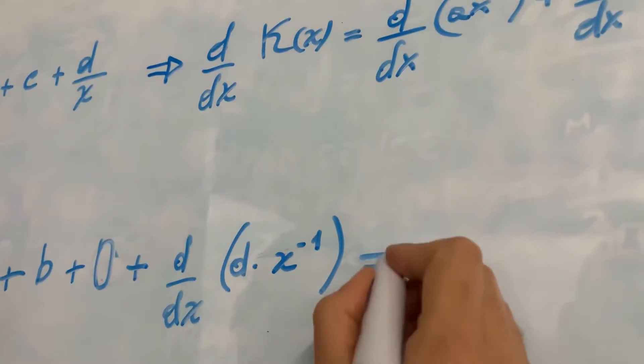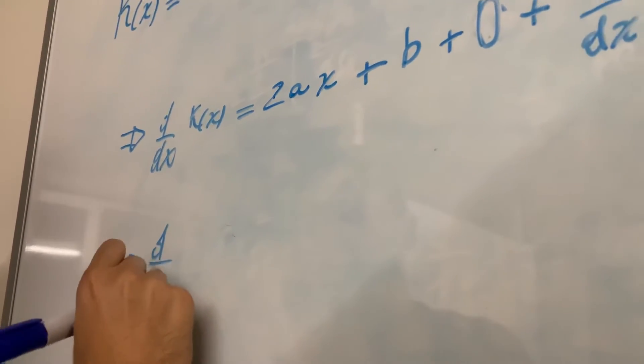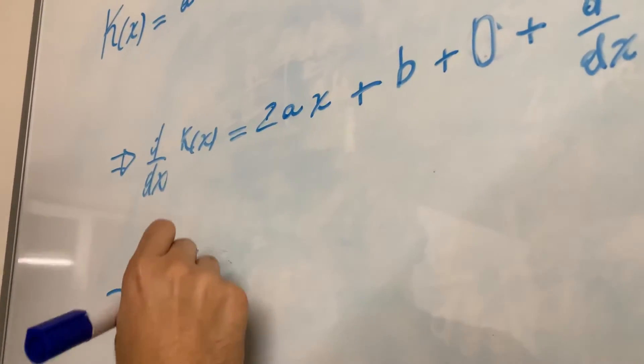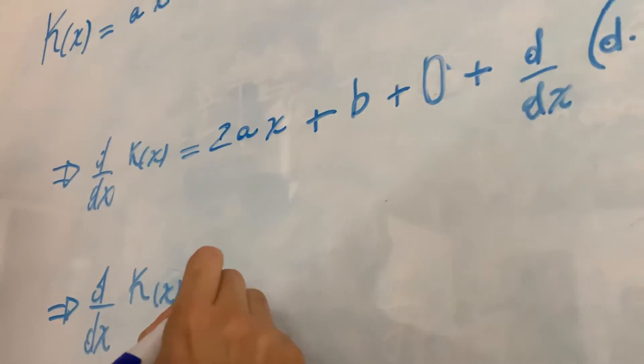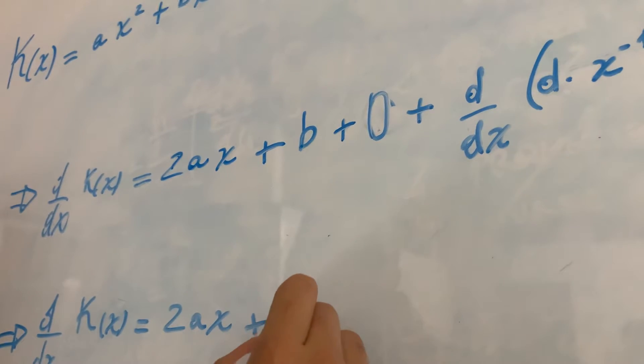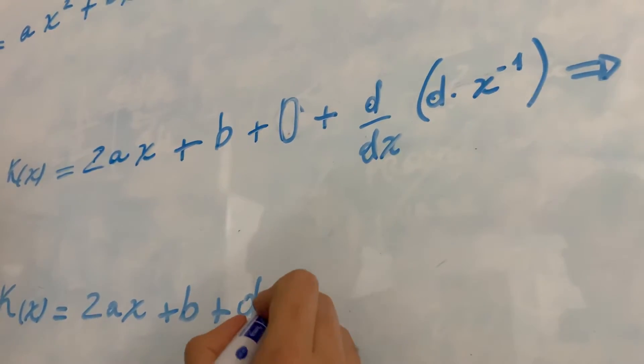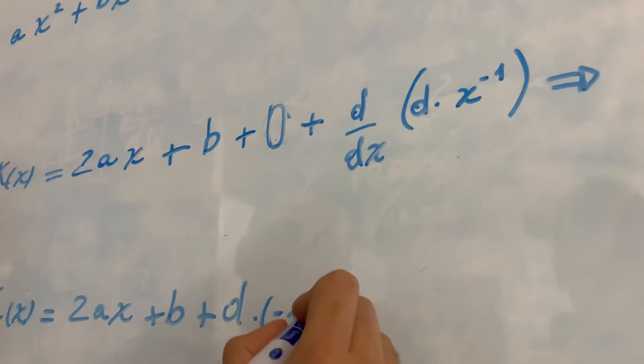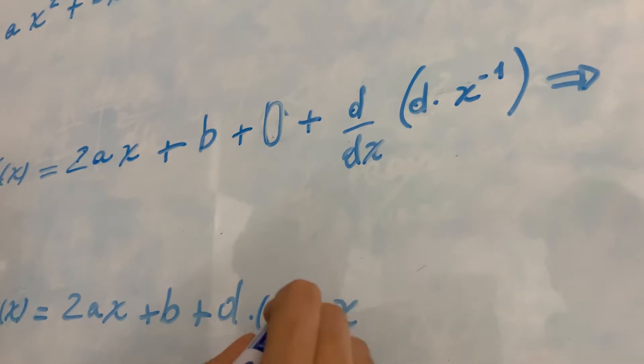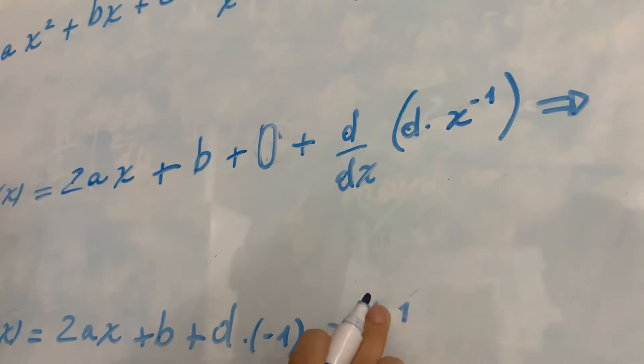And this is going to be the derivative of the variable x of the function k variable x of 2ax plus b plus d multiplied by minus 1 times x to the power of minus 1 minus 1 which is minus 2.